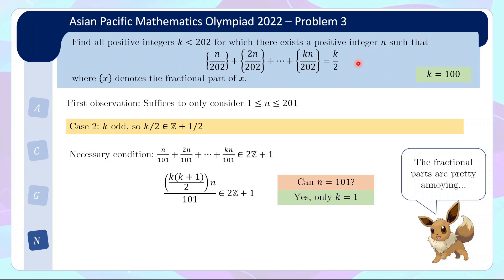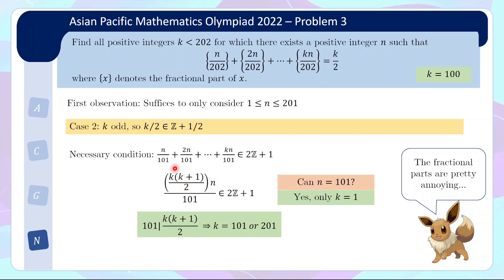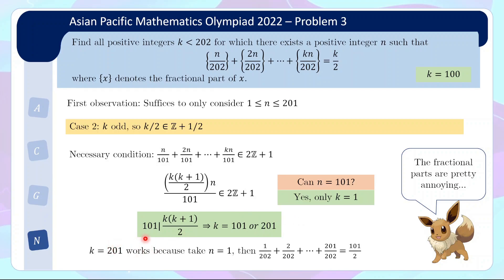If n is not 101, then 101 must divide k(k+1)/2. Considering k odd, can k be 101? Yes — k = 101 is a candidate. Can k+1 be 202? That gives k = 201, and since 201 is odd this is also a candidate. For k = 201, take n = 1: you add up all terms and fractional parts don't interfere. By pairing, the average contribution is exactly half, so this equals k over 2 as desired.